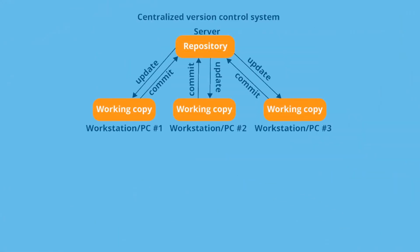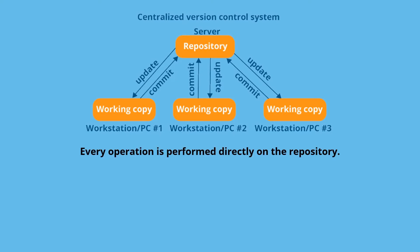In a centralized version control system, the server is in your office and the working copy is your laptop. Say there are 3 developers working in parallel. Whenever you update the code, you will update the repository in your working copy which is on your laptop. And if you commit — say you have made some change — you commit directly to the server that is in your office. You have to be connected with the server. Every operation is performed directly onto the repository, so all operations are performed directly on the server.